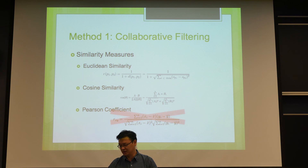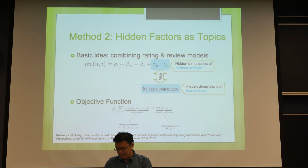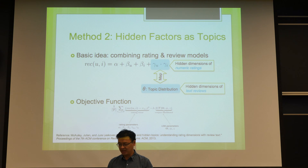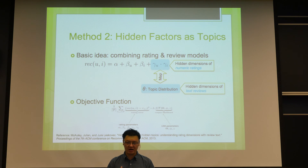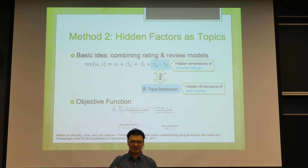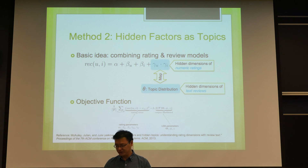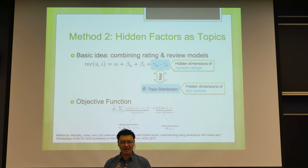The second method is called Hidden Factors as Topics, or HFT in short, proposed by McAuley and Leskovec. The basic idea is that a large part of the rating comes from my preference over some hidden aspects, and the restaurant's properties based on those same aspects — which is the interaction term you see here.